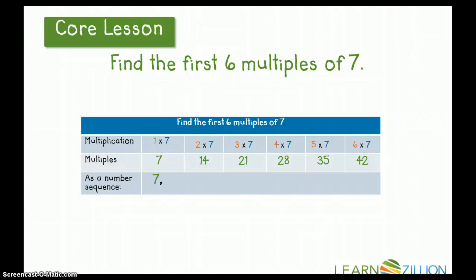So, as a number sequence, I would write it this way: seven, fourteen, twenty-one, twenty-eight, thirty-five, and forty-two. And notice that I have a comma in between each of these numbers to show that they are numbers in a list, or in a sequence. And then, I use my ellipsis to show my reader that this number sequence could go on and on and on.